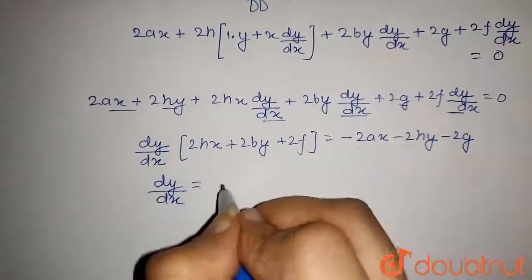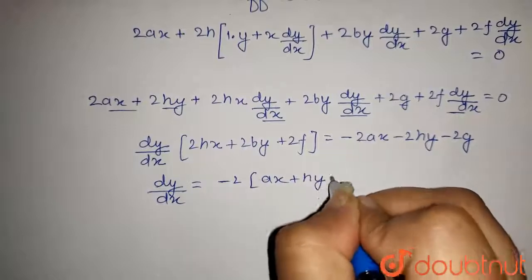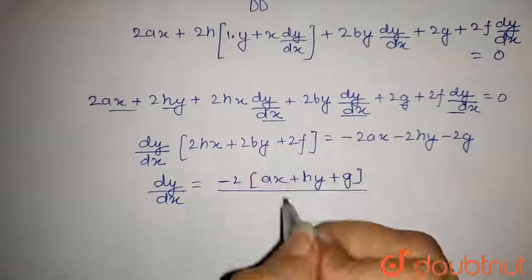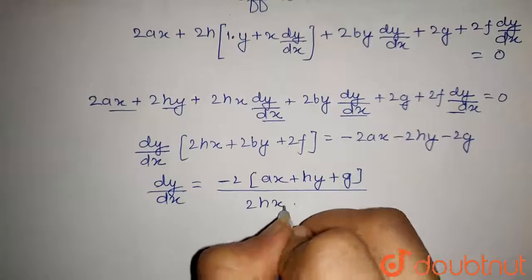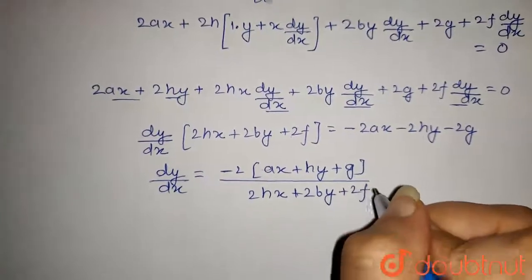taking minus 2 common from this, so this will be minus 2 into ax plus hy plus g upon transferring this term here, we get 2hx plus 2by plus 2f.